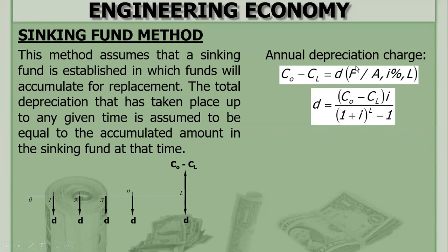If you replace this factor by (1 plus I) to the N minus 1, all over I, you cross-multiply the I, bring it down, and the numerator (1 plus I) to the L — where N is replaced by L — minus 1. So this gives the annual depreciation charge D.